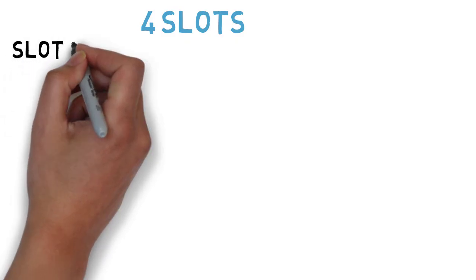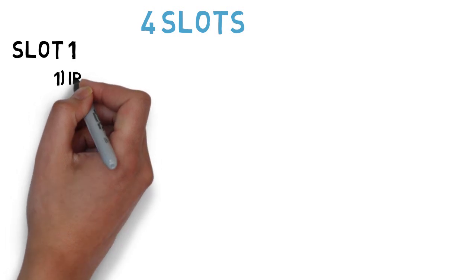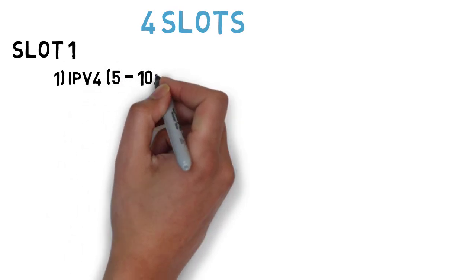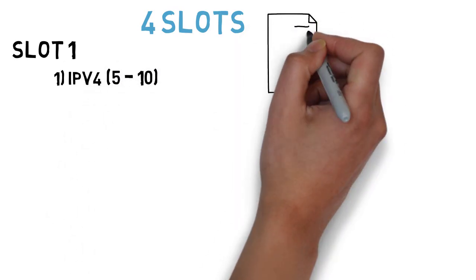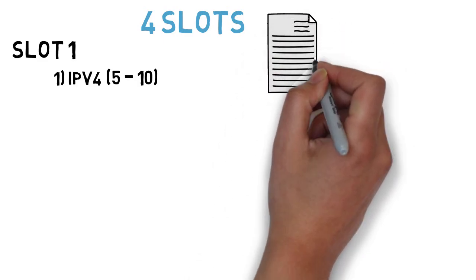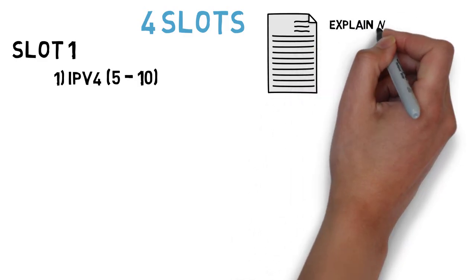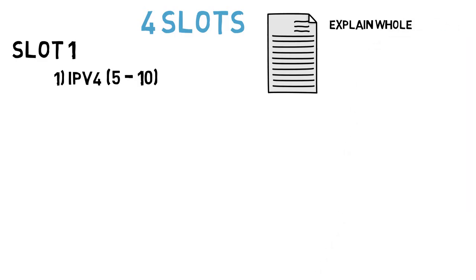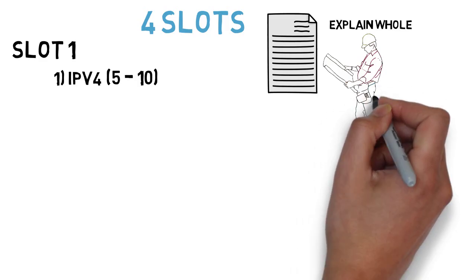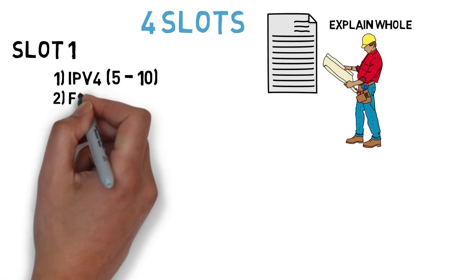We have divided the total important questions into four slots. The first question for Slot 1 is: describe the IPv4 format with diagram. This question can come for five to ten marks. If it comes for five marks, you just have to draw the header format diagram and give a small introduction. If it comes for ten marks, you will have to explain each and every element of the header in detail.